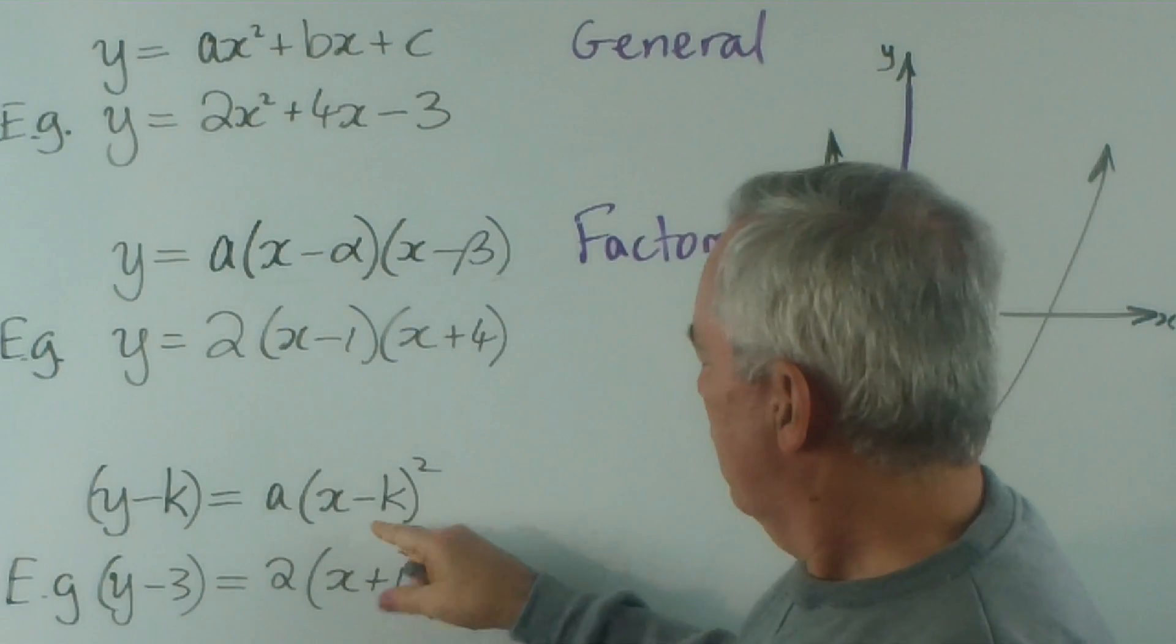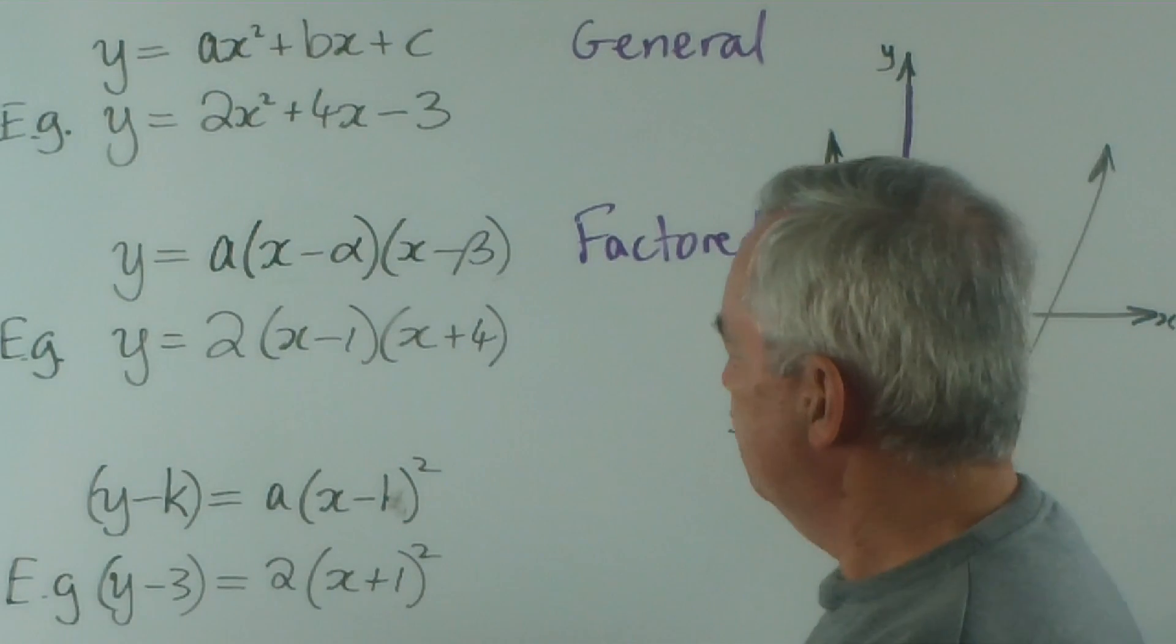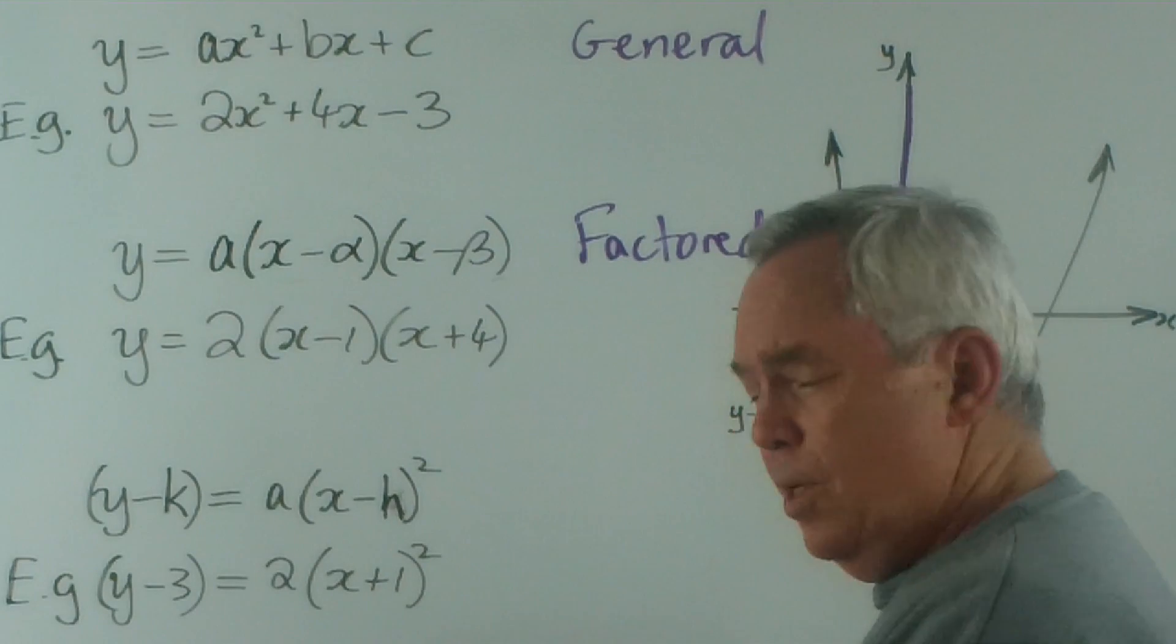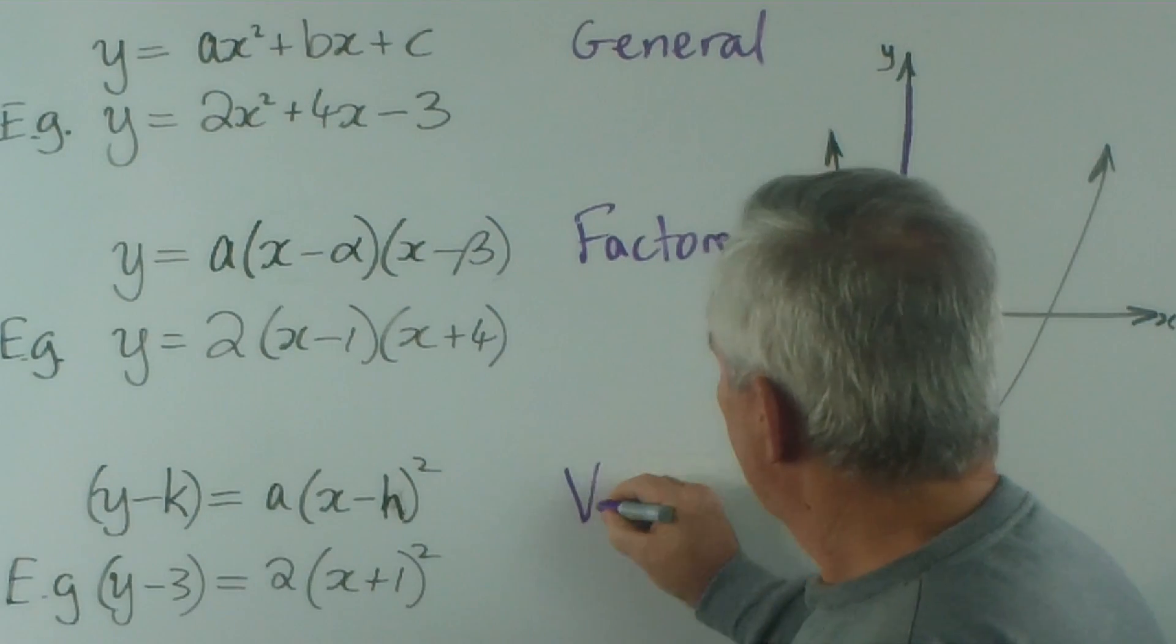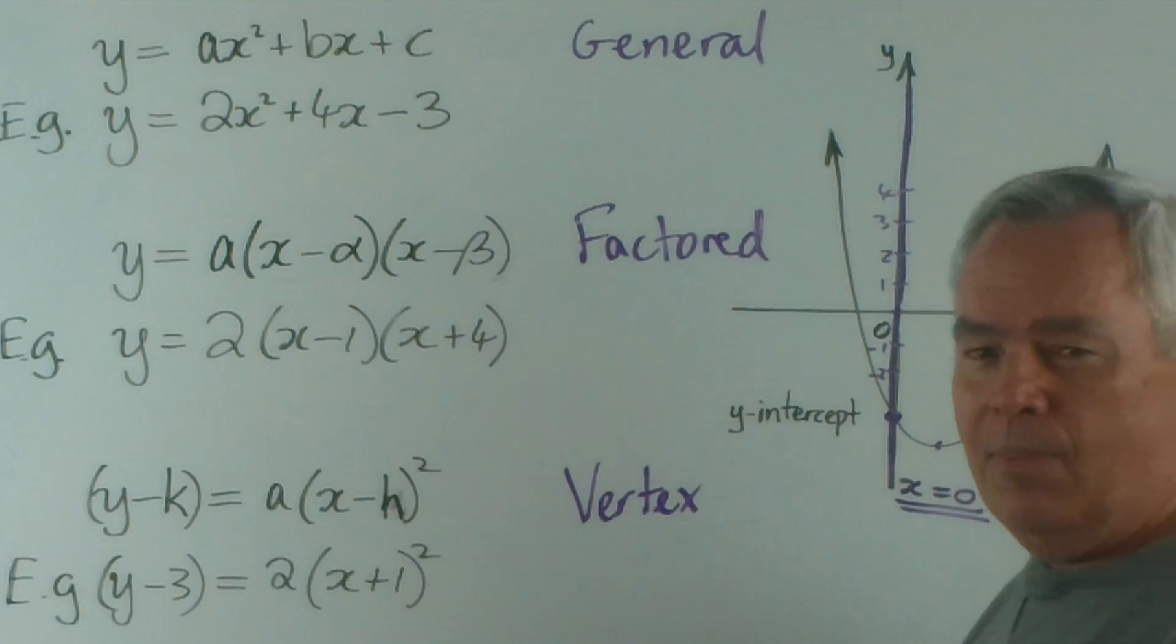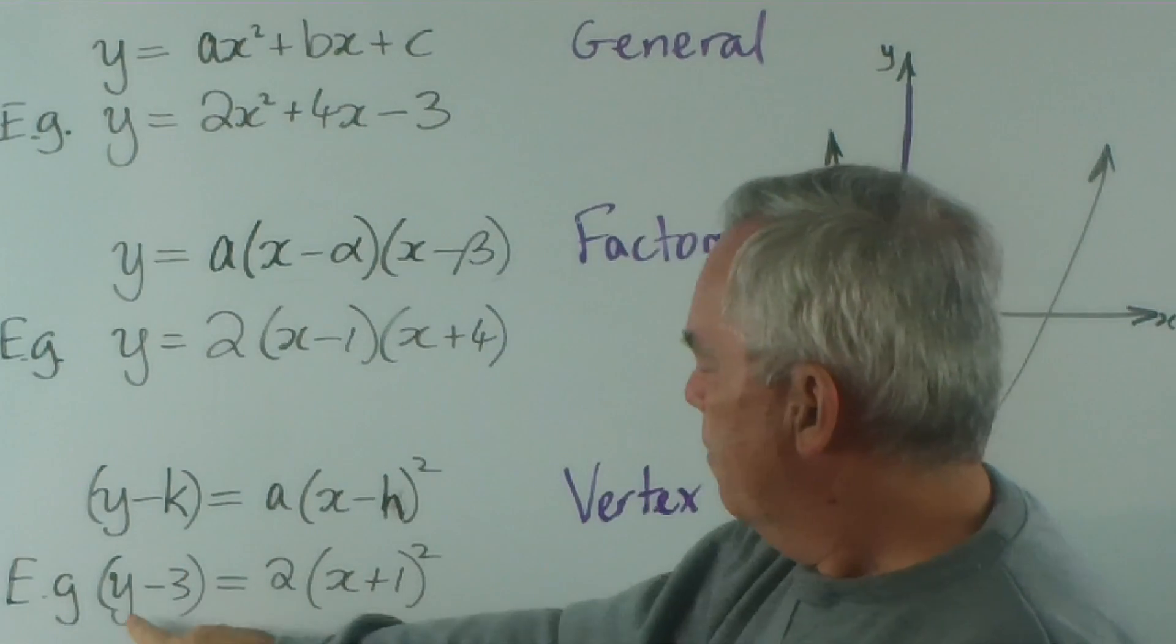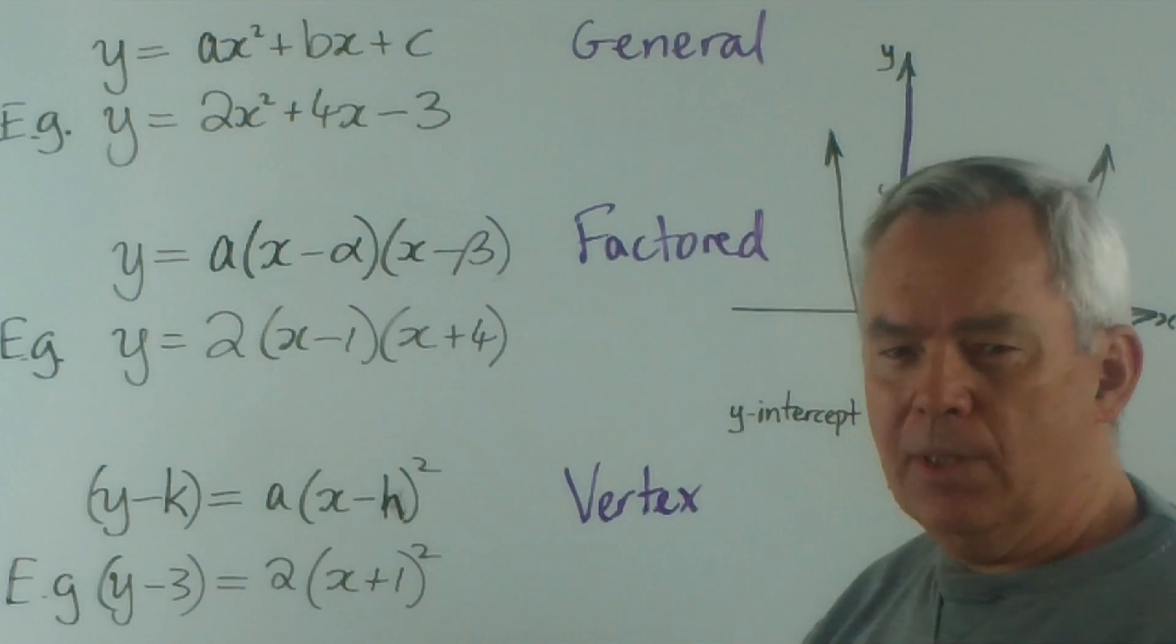The third form is often written with an h and a k, and this is called the vertex form of the parabola. It's particularly good for finding the vertex—more on that in another video. It's written in this form, and you can see it's quite different from the other two. The example I've got is (y - 3) = 2(x + 1)².